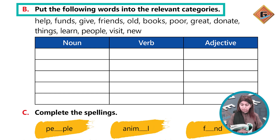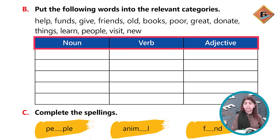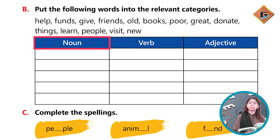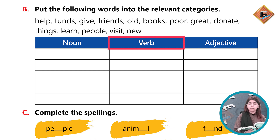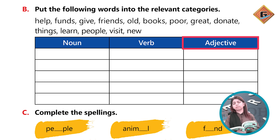Put the following words into the relevant categories: noun, verb, and adjective. Noun is the naming word, verb is the doing word, and adjective we have covered in class 1.